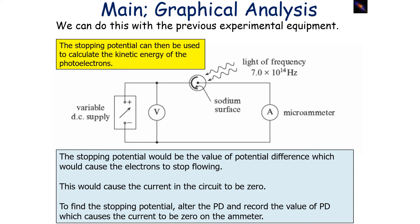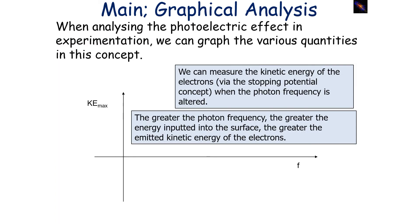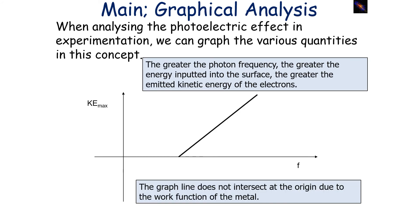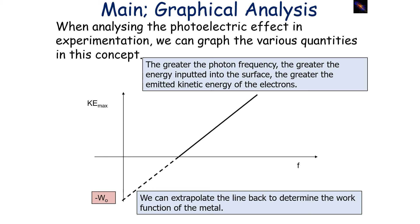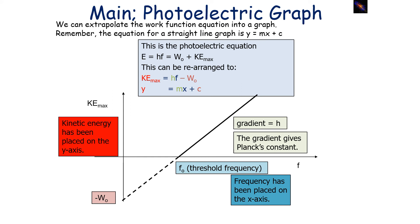The stopping potential can then be used to calculate the kinetic energy of the photoelectrons. When measuring kinetic energy against photon frequency, we find that the greater the photon frequency, the greater the energy input into the surface and the greater the emitted kinetic energy of the electrons. As a result, we get a straight line on the graph. The line does not intersect at the origin due to the work function of the metal — a certain amount of energy must be given to the metal before any electrons are emitted. We can extrapolate the line back to determine the work function, which is the y-intercept. Rearranging the photoelectric equation: kinetic energy = hf − work function.